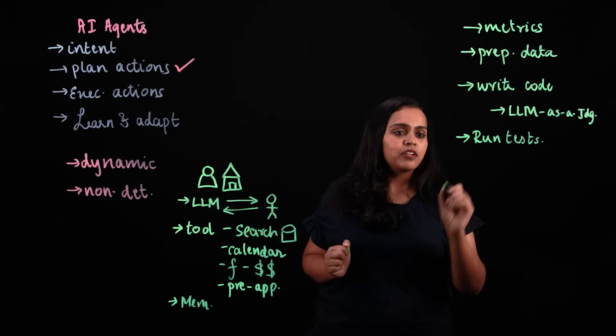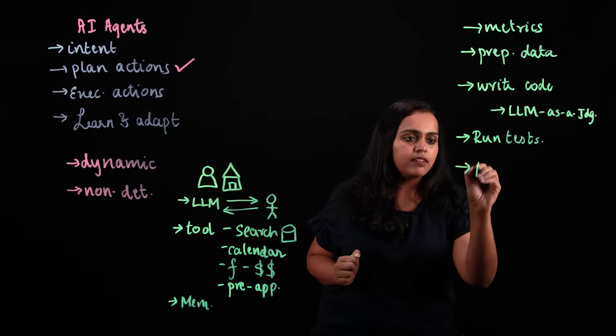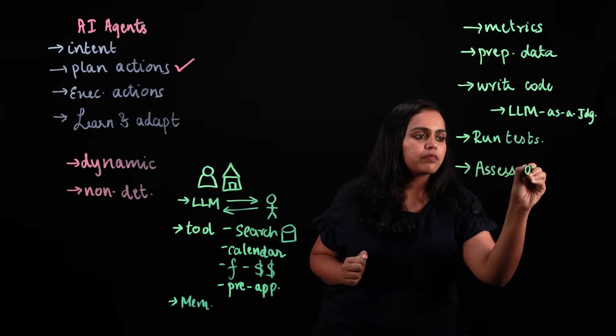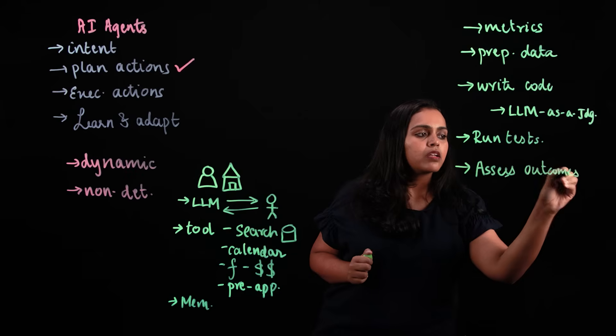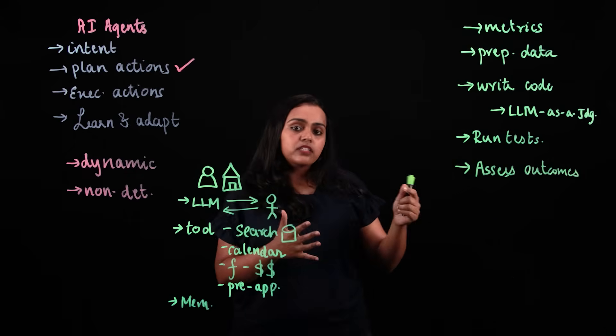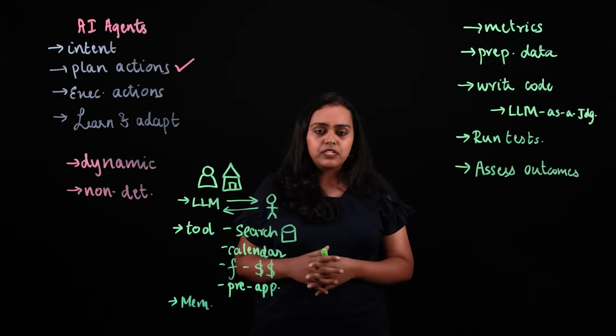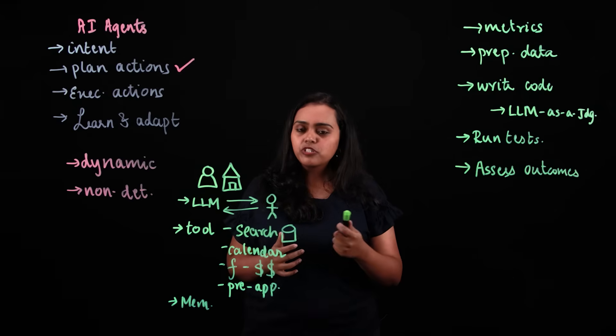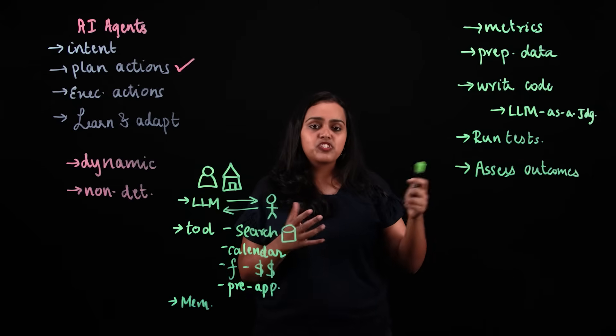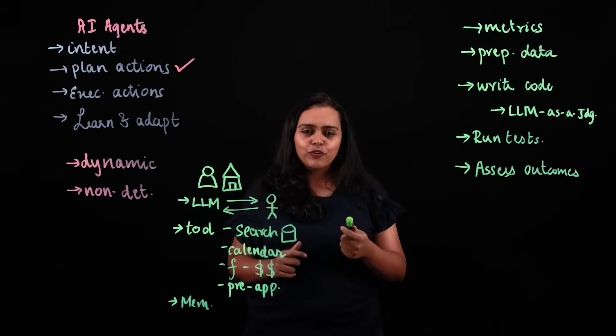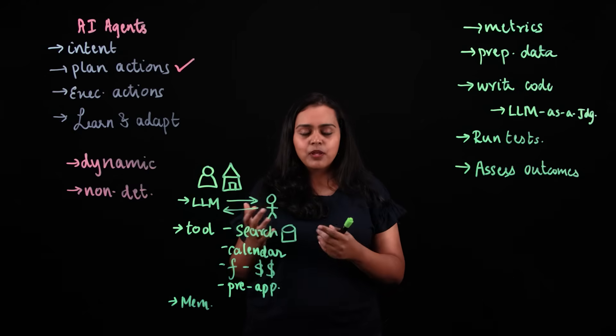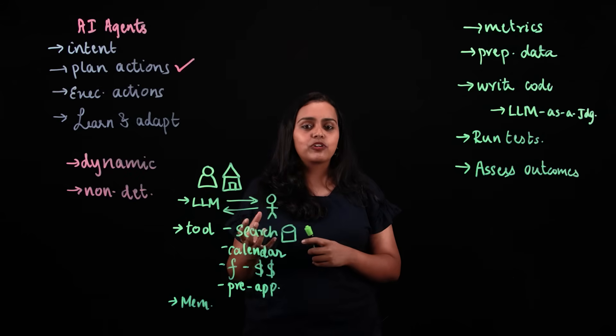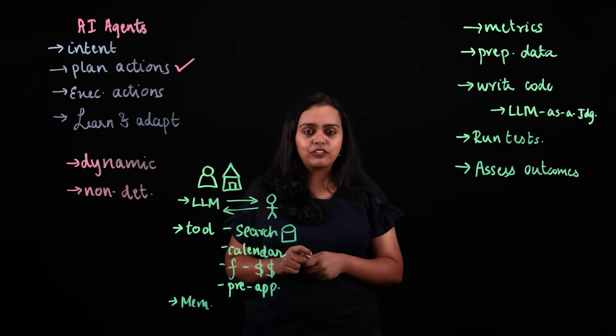Once you finish running the tests, you would then assess the outcomes. You would look at all the data that you have captured and make an assessment on your agent. If there are certain trade-offs that you need to do, this is the stage where you would be making those calls. For example, if you have poor metrics on both accuracy and latency, you have to make a call on which metric you are going to sacrifice to get a better outcome on the other.